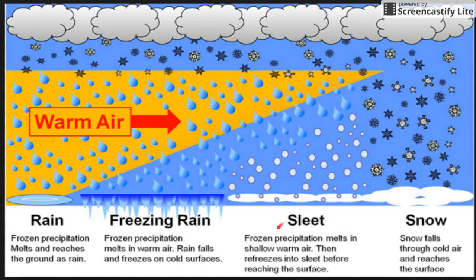Little balls — it even stays frozen. Precipitation melts in the shallow warm air, then refreezes into sleet before reaching the ground.